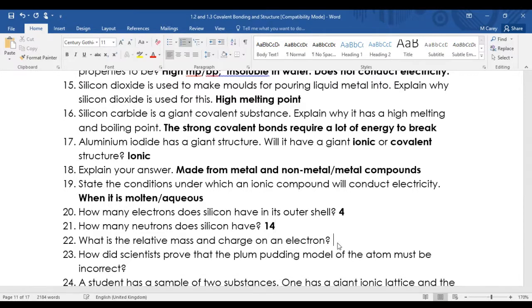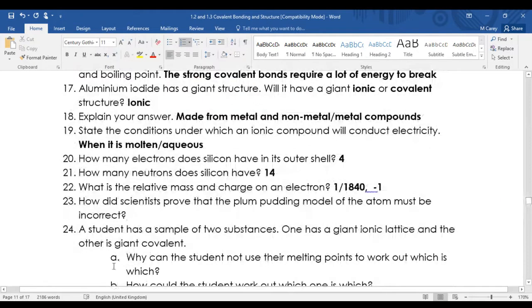What's the relative mass and charge on an electron? Relative mass is 1/1840 and relative charge is minus 1. How did scientists prove that the plum pudding model must be incorrect? Actually ignore that because that's not on our spec, but it was the alpha particles experiment. Sorry about that, I should cross that out.